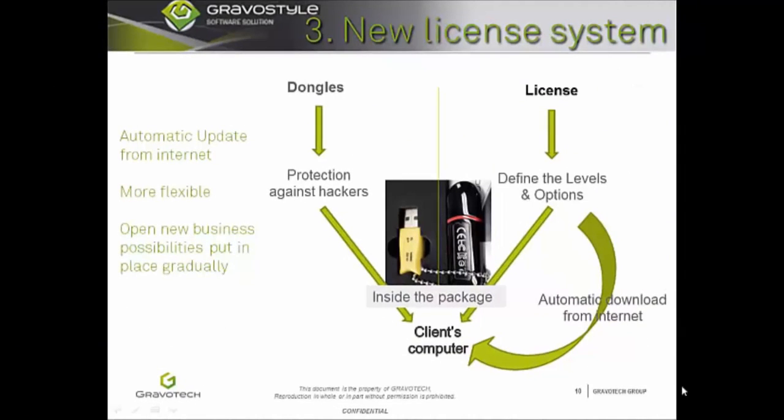The third key point of change in GraviStyle 8 is the new license system. We still use a dongle to protect the software from hackers, but now the license levels can be automatically upgraded via an internet connection. If there is no internet connection, the user can update using a USB key and upgrade file sent directly from GraviTech. We have now streamlined this process so you can quickly use your new software.